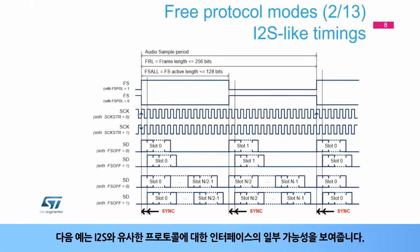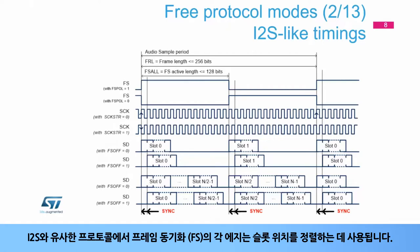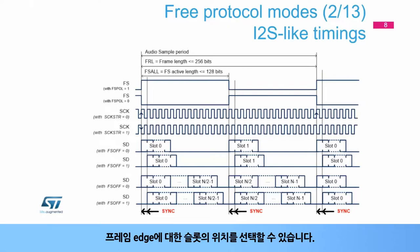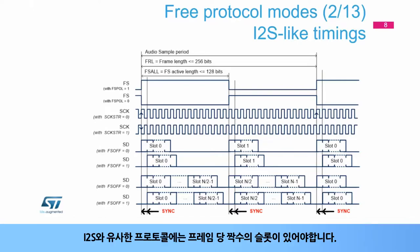The following example shows some of the possibilities of the interface for I2S-like protocols. In an I2S-like protocol, each edge of the frame synchronization (FS) is used to align the slot positions. The frame length, the duty cycle, and polarity can be adjusted. The clock data strobe edge can be selected as well. The position of the slots with respect to the frame edges can be selected. The size of the slots can also be adjusted. There must be an even number of slots per frame in I2S-like protocols.